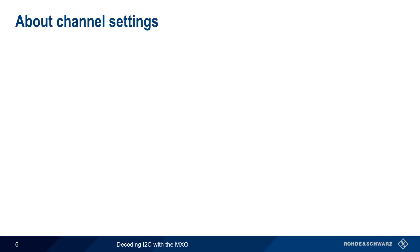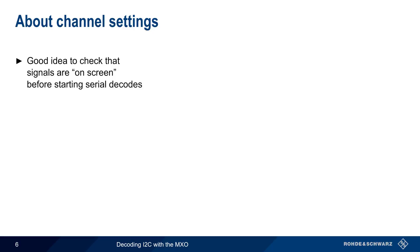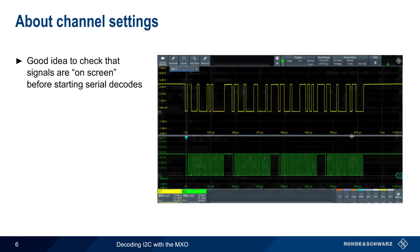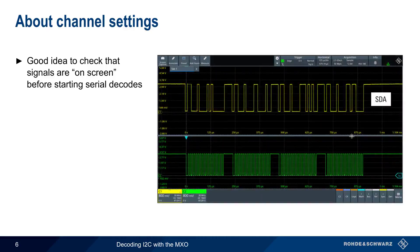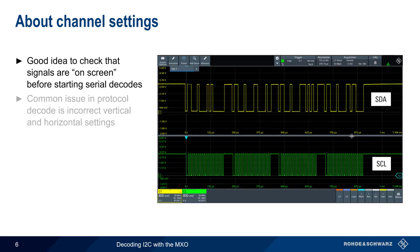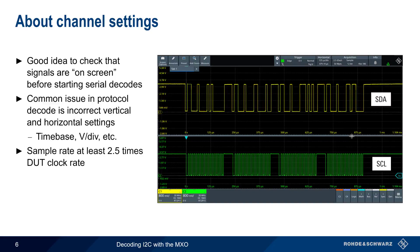At this point, let's pause to talk about channel settings. Before starting serial decodes, it's always a good idea to first check that both SDA and SCL signals are on screen. In this example, the channels connected to serial data and serial clock have appropriate vertical and horizontal scaling. The most common issue seen in serial decoding is incorrect vertical and horizontal settings, such as the wrong time base or volts per division settings, so it's best to visually verify these are set appropriately. Another potential issue is too small of a sample rate — at least 2.5 times the clock rate is the standard recommendation.